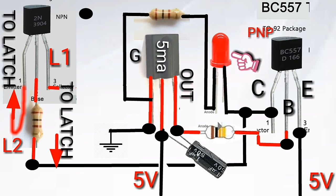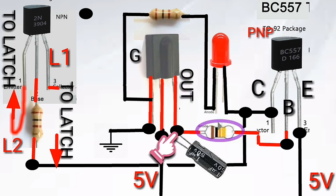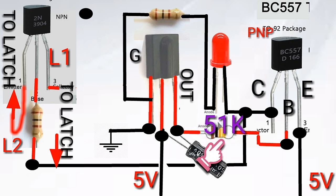The BC557 is a PNP transistor. The base is connected to the negative output of the IR receiver via 51 kilo ohms resistor.